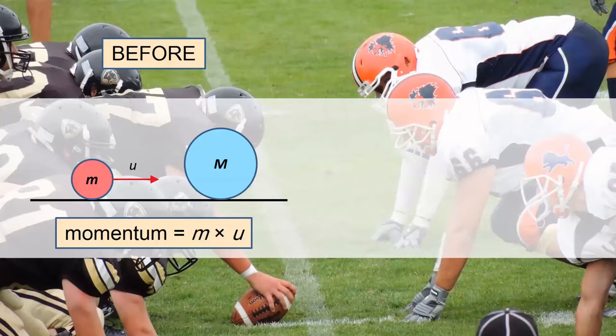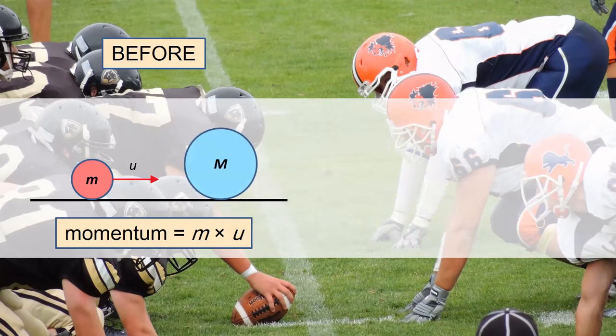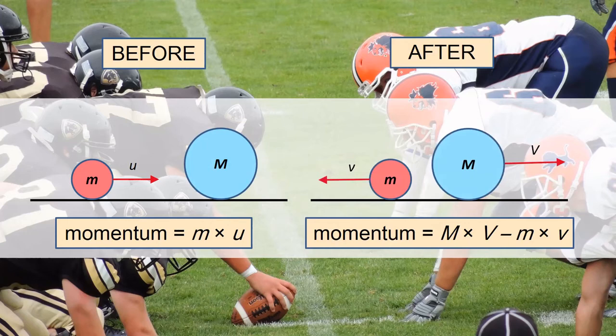In this example, the total momentum before impact is the mass times velocity of the smaller object. The larger object is stationary. Total momentum before impact is equal to the total momentum after impact, which is the sum of the mass times velocity of each individual body.